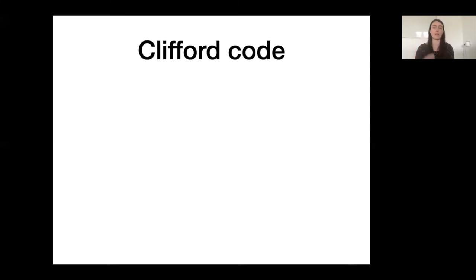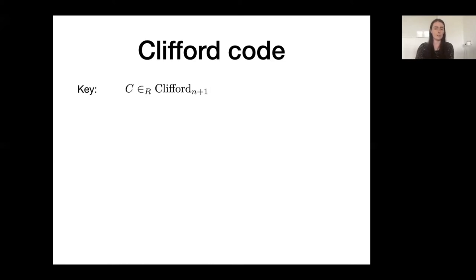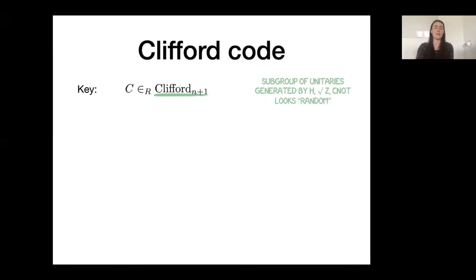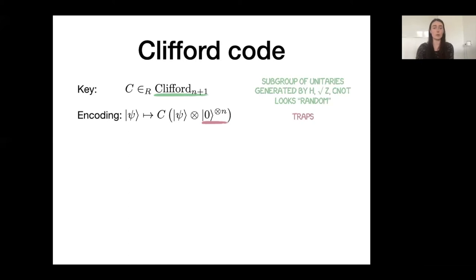The specific code we use is called the Clifford code. The key is a random element C from the Clifford group on n plus one qubits, where n is the security parameter. The Clifford group is a group of unitaries generated by a few single and two-qubit gates, and it acts as a kind of one-time pad to a quantum state. The encoding of a single qubit state psi is done by appending n computational zero qubits — called traps — to the state, then applying the Clifford C to the entire state. To decode, C inverse is applied and the traps are measured in the computational basis; if all measurements return zero, authentication is accepted.